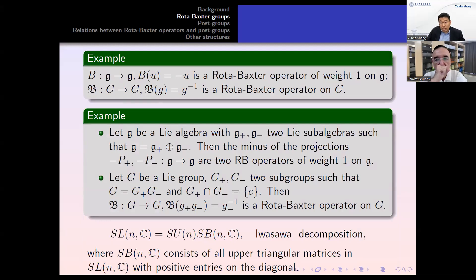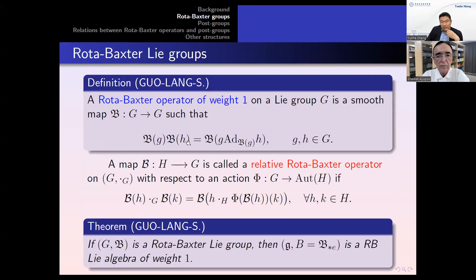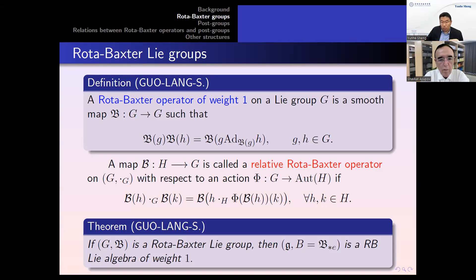Regarding representations: how about the correspondence between Rota-Baxter groups and Rota-Baxter Lie algebras for representations? The general definition of a representation can be defined — a representation on a vector space V together with a linear map T. We can define a representation and cohomology. This representation can also be differentiated to obtain the representation of the corresponding Rota-Baxter Lie algebra. So we have such a functor.